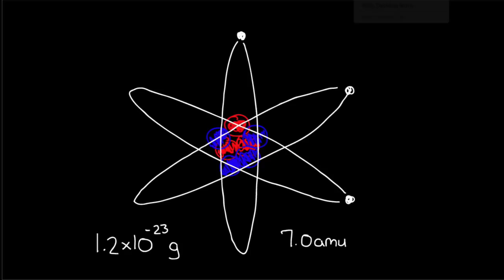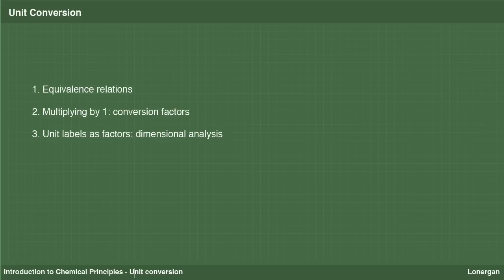In this screencast, I will introduce unit conversion. There are three main points that will be addressed. The first is the concept of an equivalence relation. From this, we will see how conversion factors are derived and how conversion problems essentially are successive multiplication by one. Finally, I will discuss the cancellation of unit labels to determine the units of our final answer and as a means to guiding us through the conversion process.